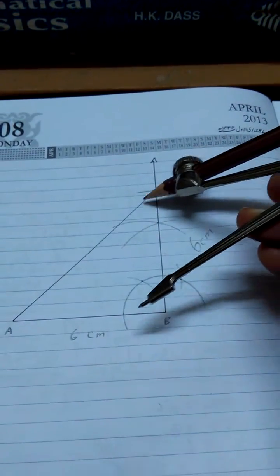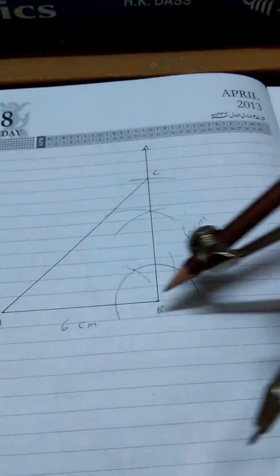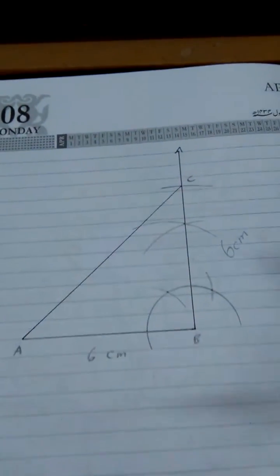...such that it cuts the ray B at this point C. Once the point C is obtained, you just join your C with the A, and now this right triangle is right over here.